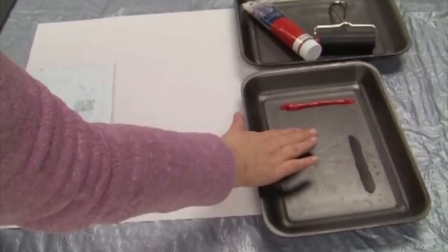Okay, we have our brayer and our ink, and I've put a strip of ink on this styrofoam tray, and then we have our printing plate.